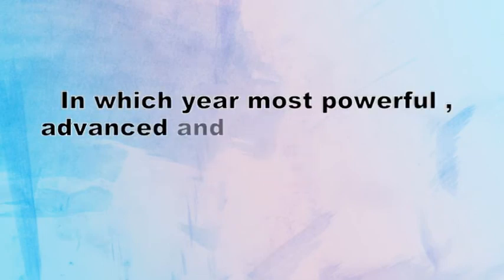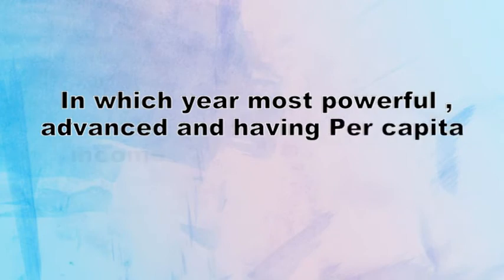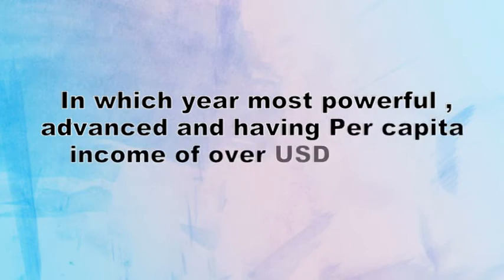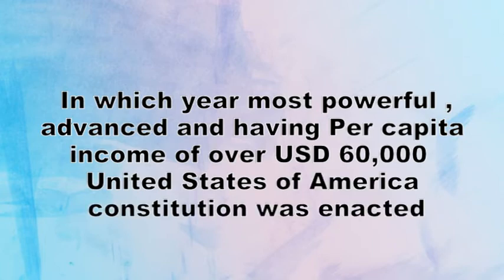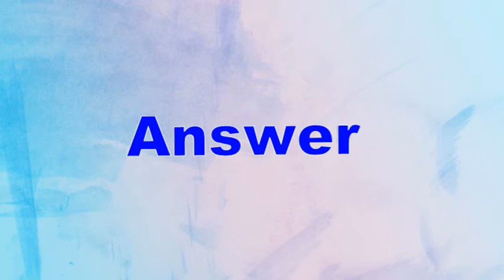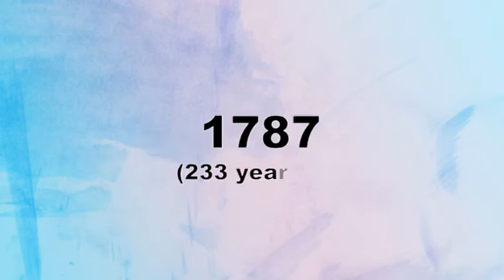Question 16: In which year was the most powerful and advanced United States of America constitution — a country with a per capita income of over US$60,000 per year — enacted? 1. 1697. 2. 1998. 3. 1787. 4. 1945. Answer: 1787, which is 233 years ago.